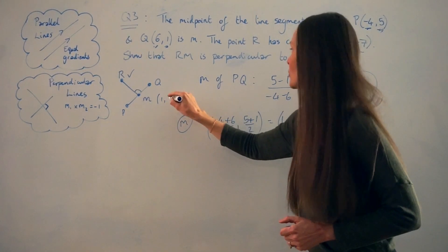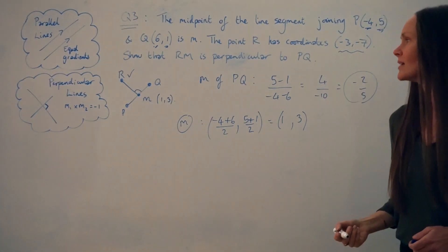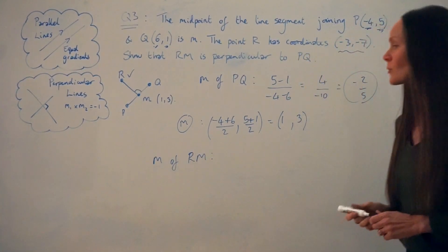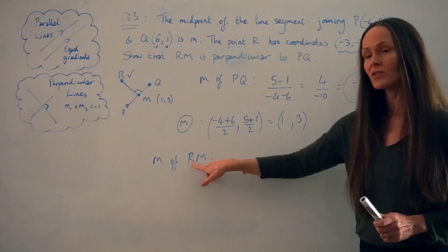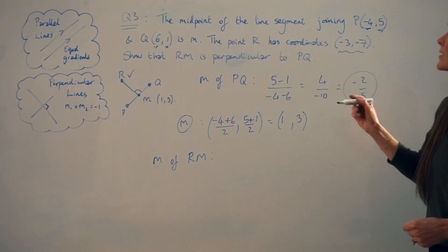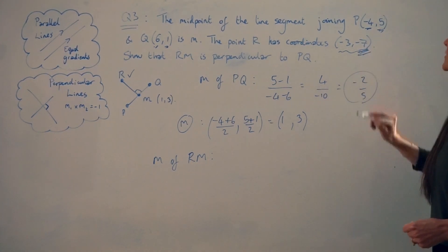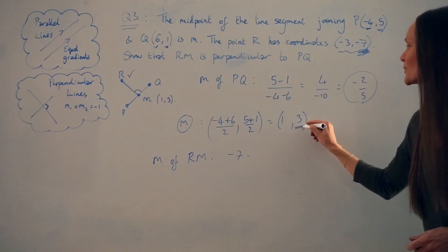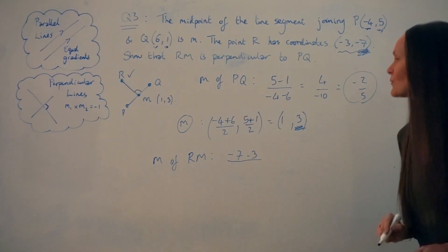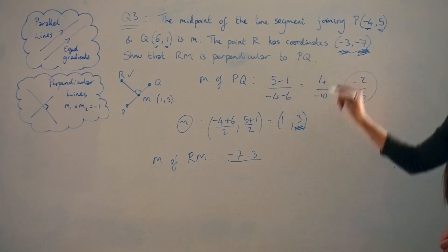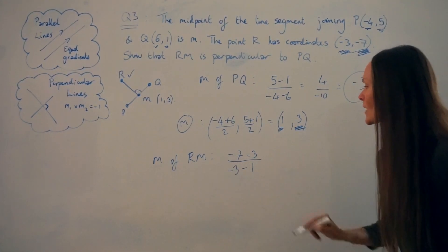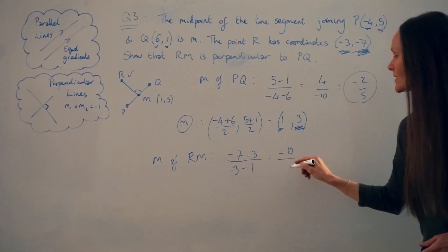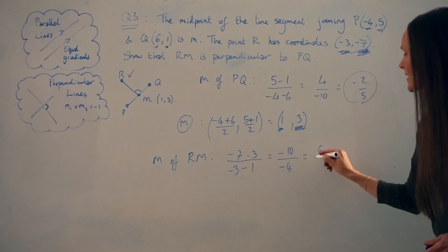Now we have coordinates for both R and N, so we can calculate the gradient of line RN. Using rise over run: subtract the Y coordinates of R and N — so −7 take away 3. Divide by the difference in X values: −3 take away 1. That gives negative 10 over negative 4, which simplifies to 5 over 2. So the gradient of RN is 5/2.